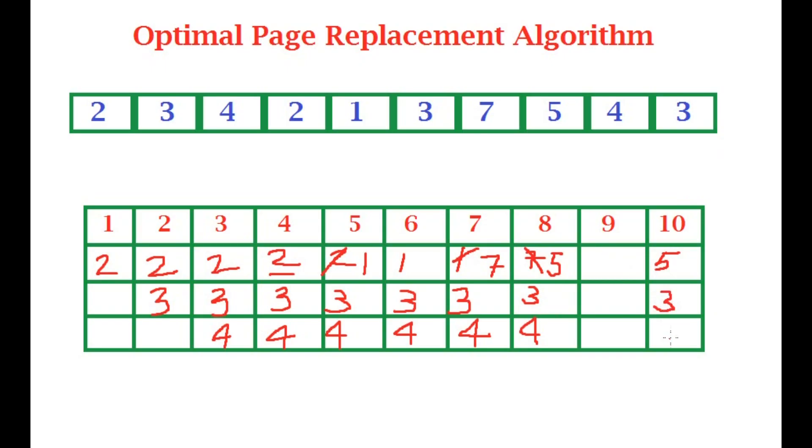So this is the optimal page replacement algorithm. Let us just point out the page hits. So this was a page hit, this again was a page hit, this was a page hit, and I guess the third one, this one, this one was a page hit. So now in this case we have four page hits, that is actually pretty good. So guys, thank you for watching.